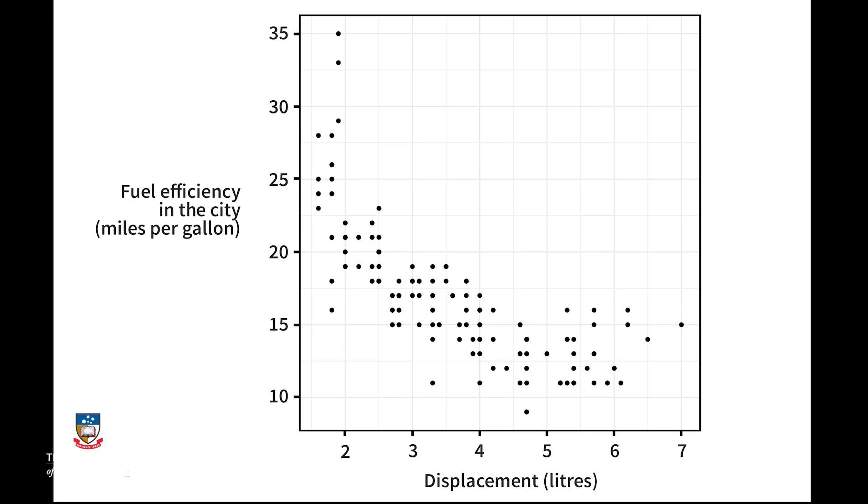Finally, you have a go yourself. Back to the MPG dataset. This scatter plot has the city fuel efficiency against the displacement. Describe that relationship. Seriously, pause the video, have a go.